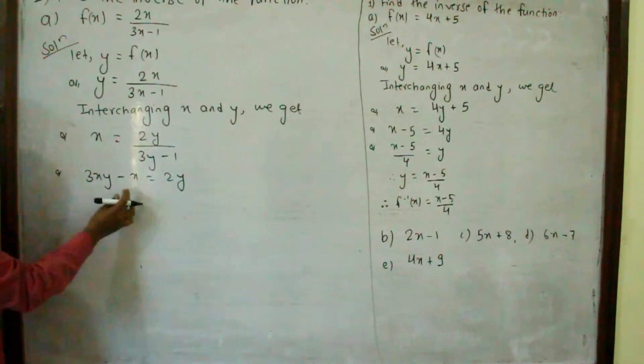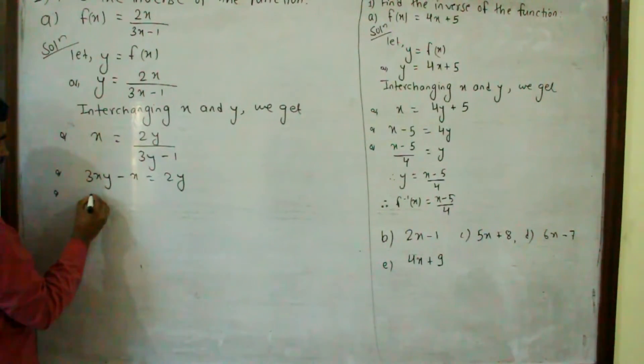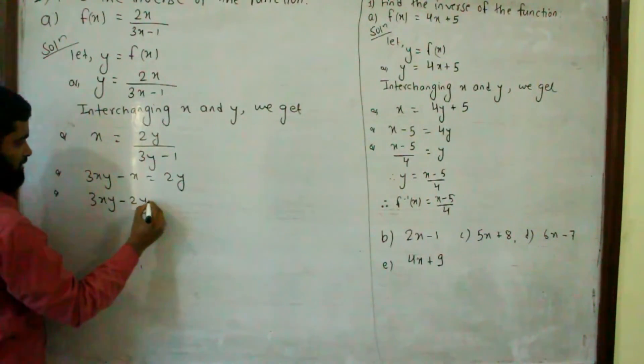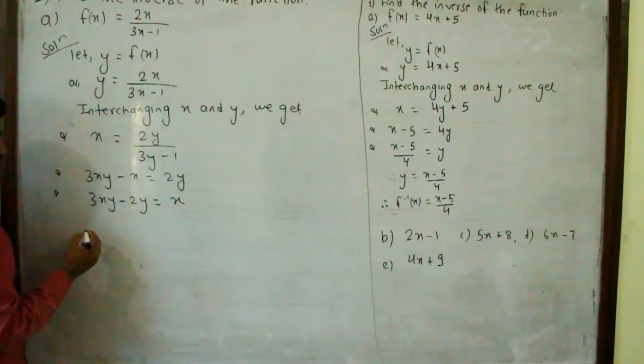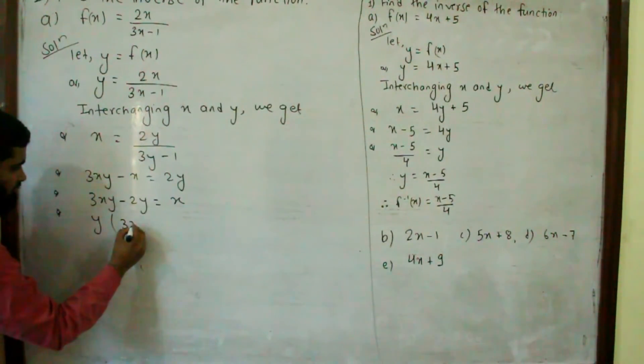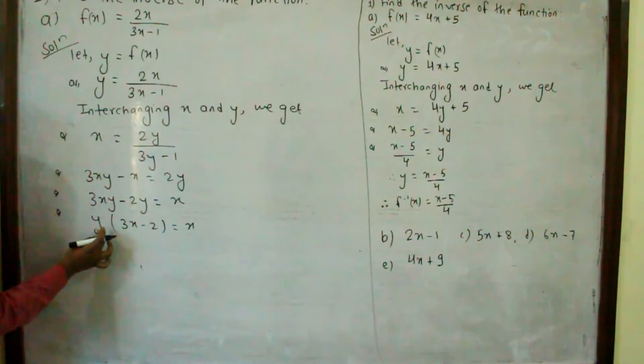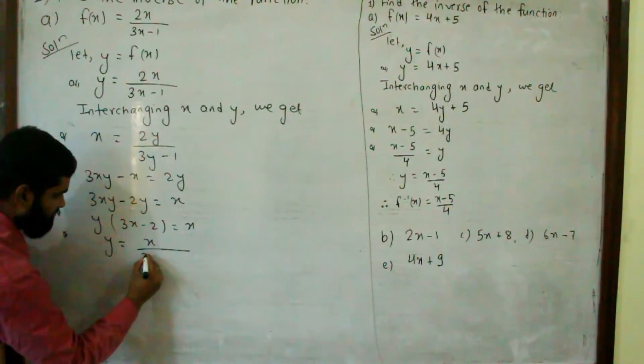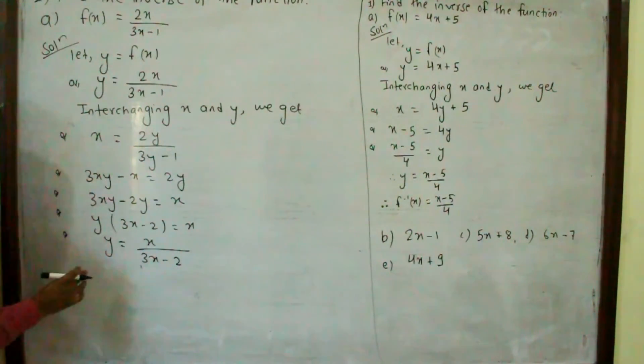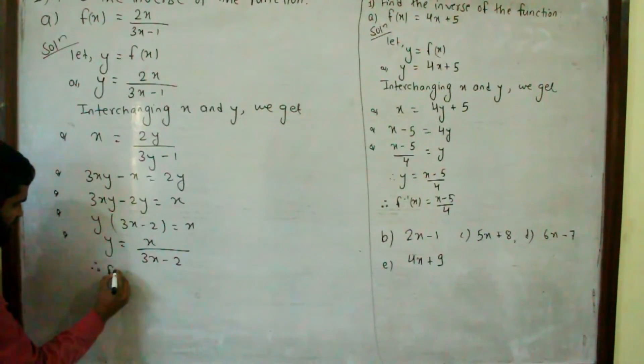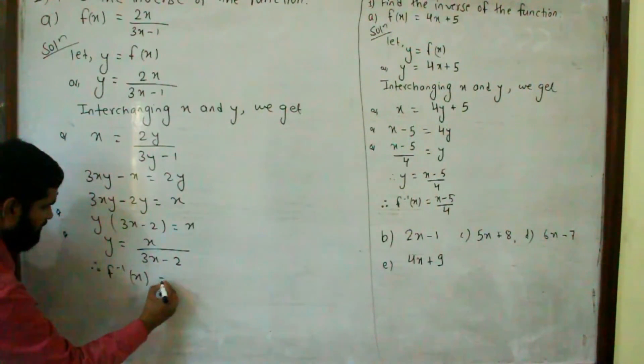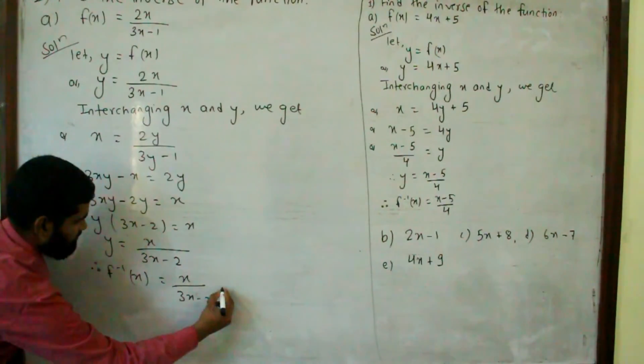We need to find y. Taking y common: 3xy minus 2y equals x. Factoring out y: y(3x minus 2) equals x. Therefore, y equals x upon 3x minus 2. This is the value of y, which is f inverse x. Therefore f inverse x is equal to x upon 3x minus 2.